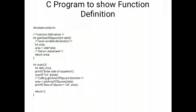This is the C program to show the function definition. First part is the function definition part. We are defining the function getAreaOfSquare. Here we are calculating the area of the square: area equals side times side and return area.